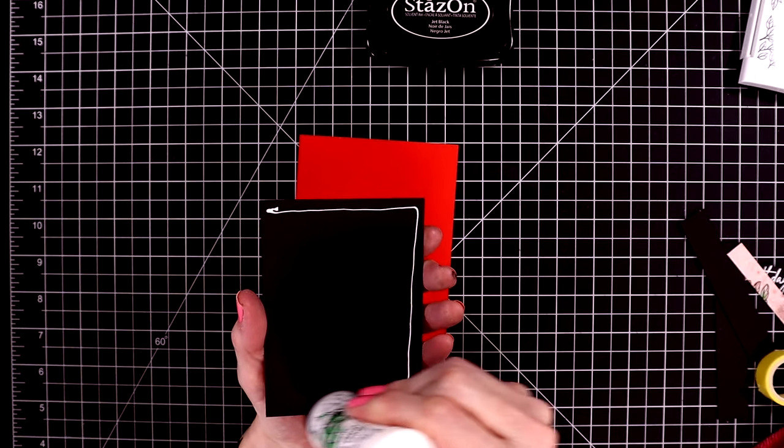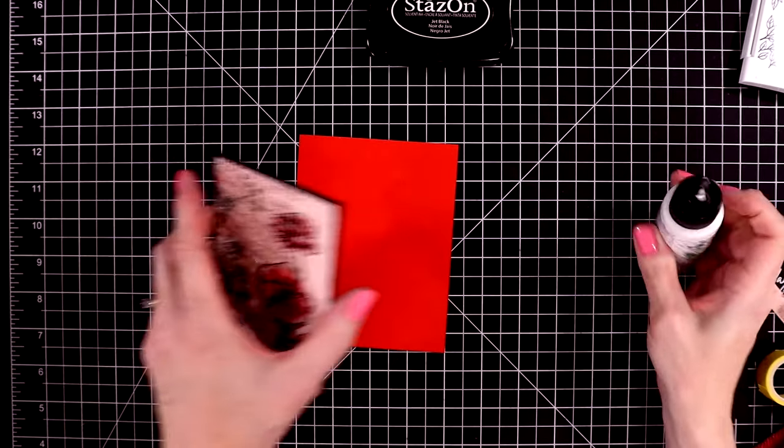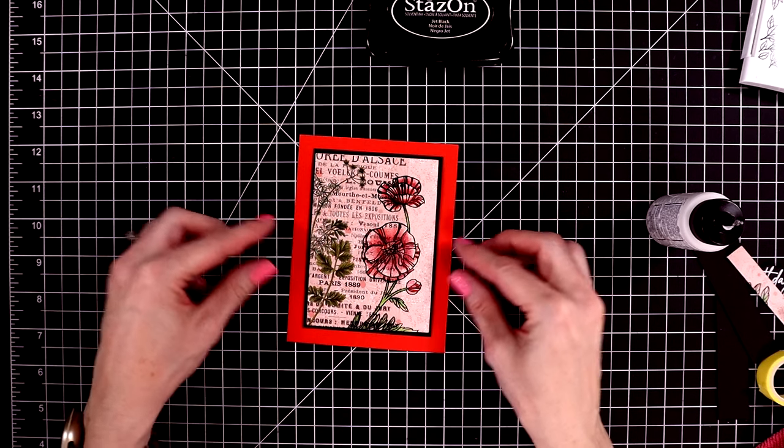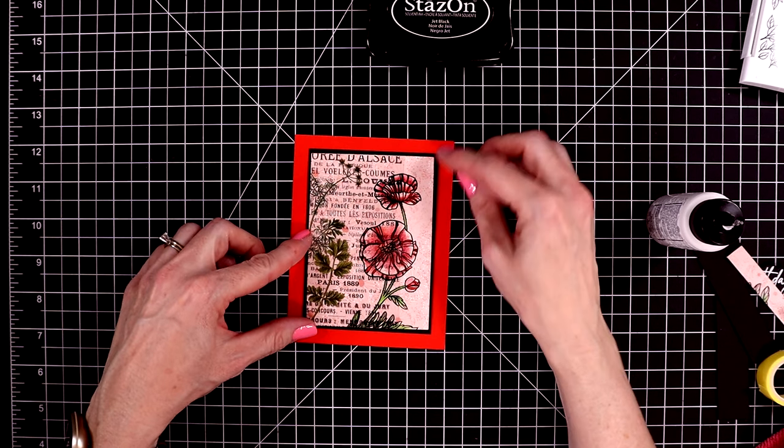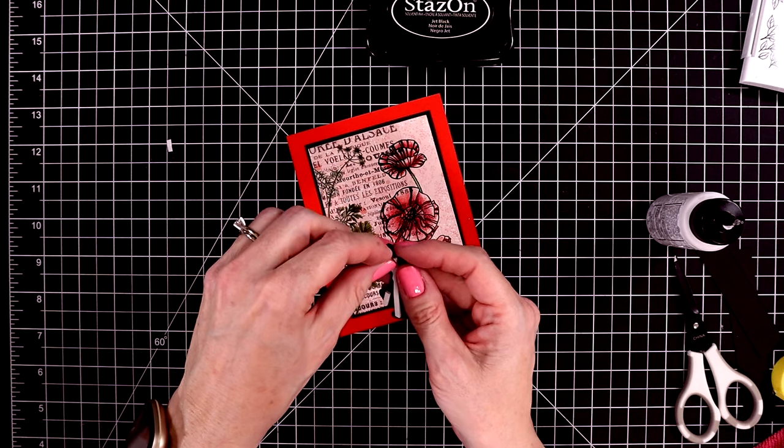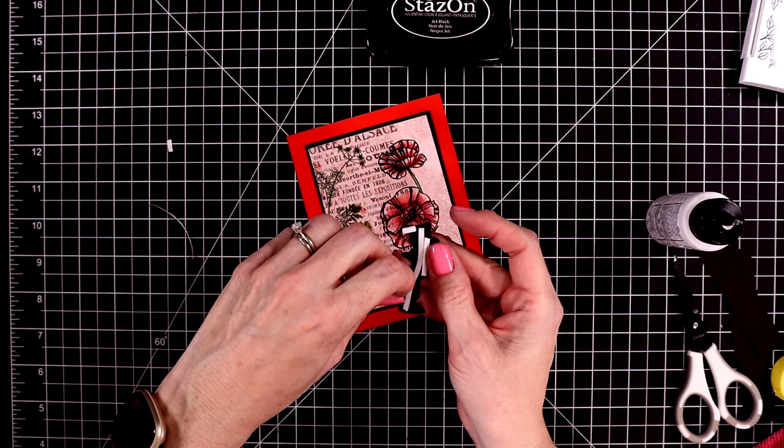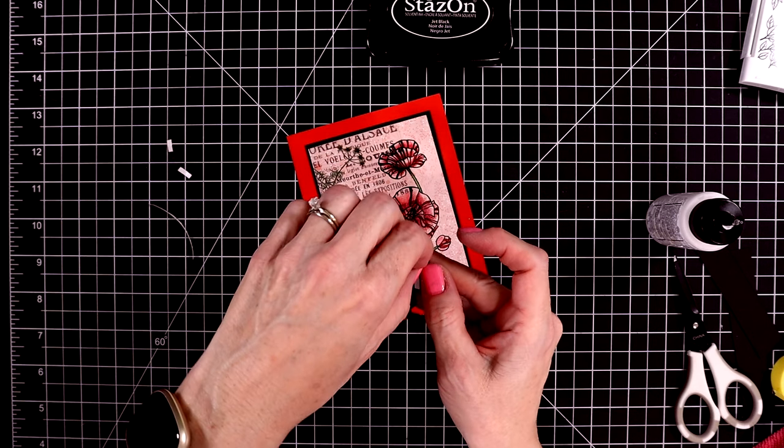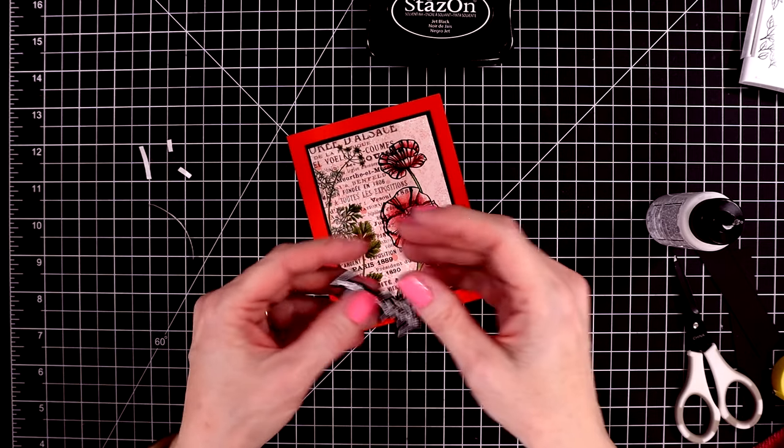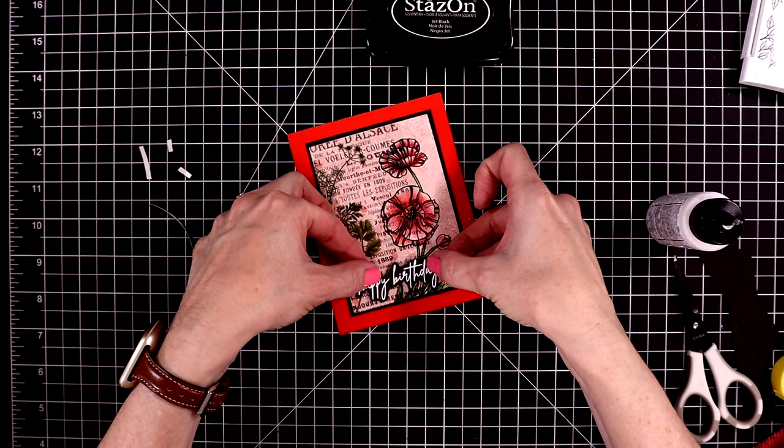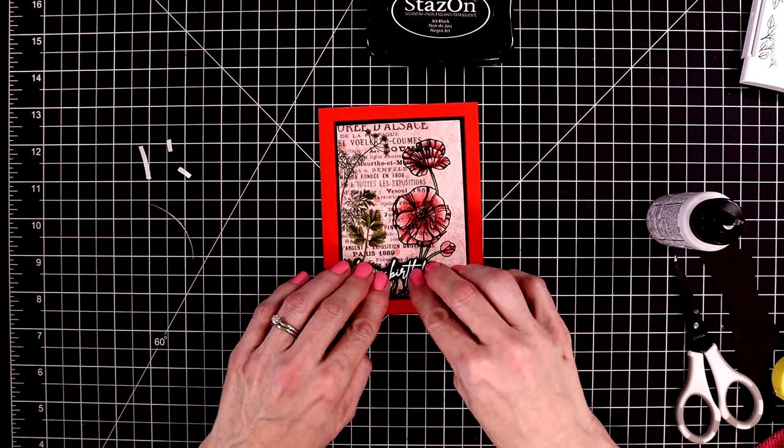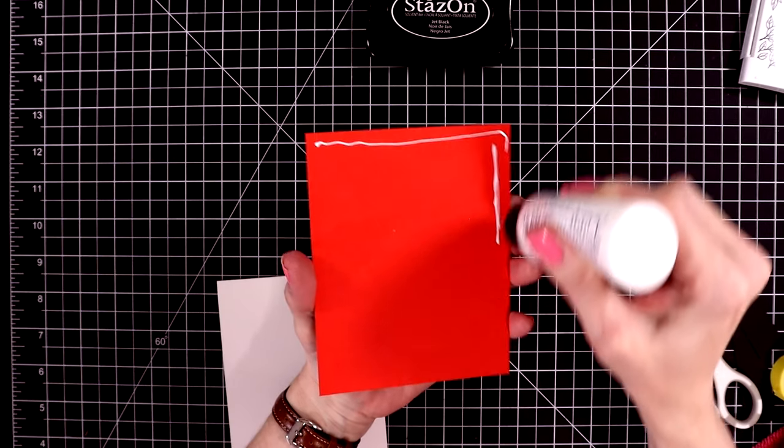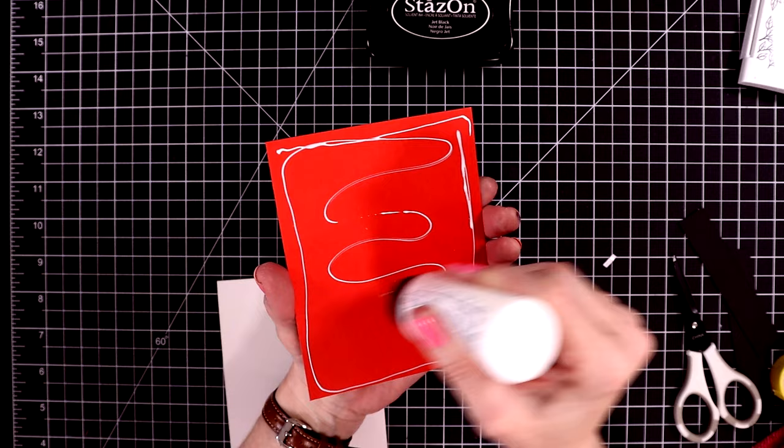And then this piece I'm going to glue on to another panel of the lipstick red. The sentiments, again, popping up with the foam strips. And it's just going to go kind of at the bottom on the left. And it's going to be a happy birthday card. Now I can attach it to a white card base.